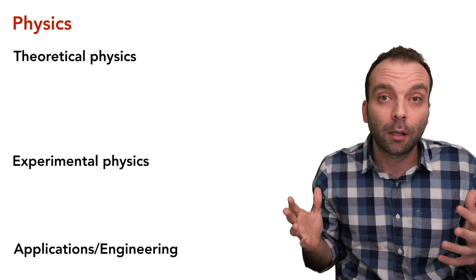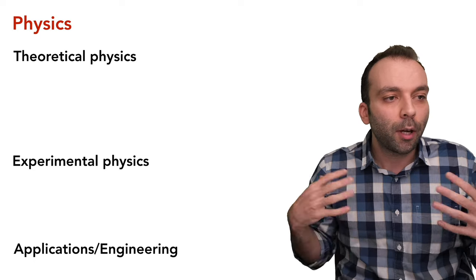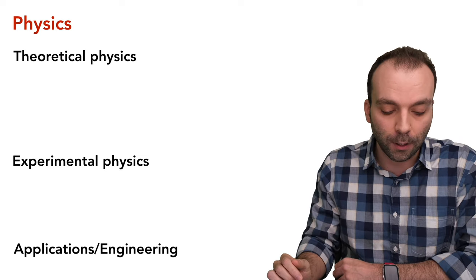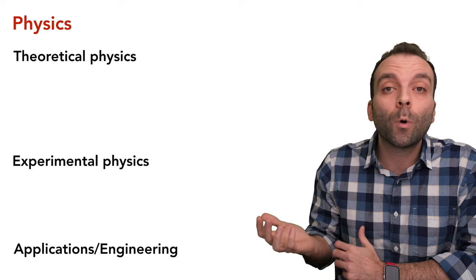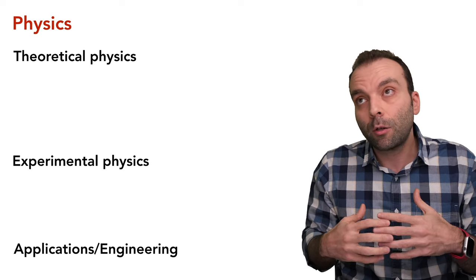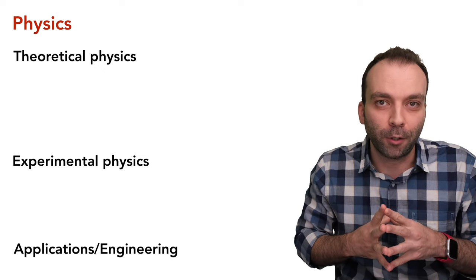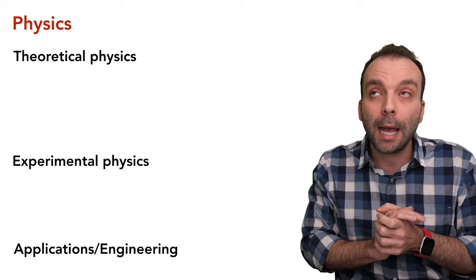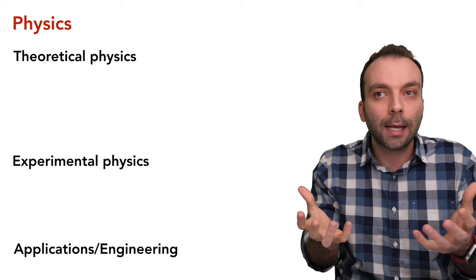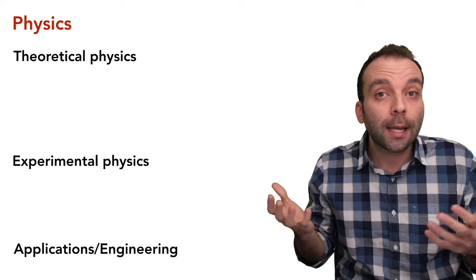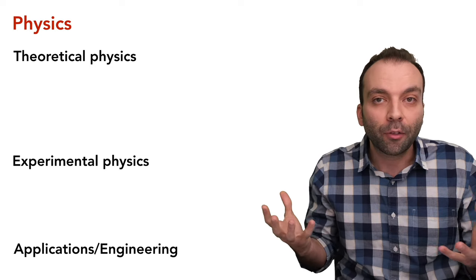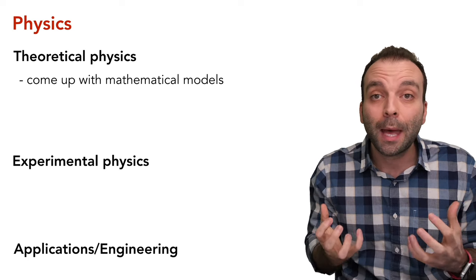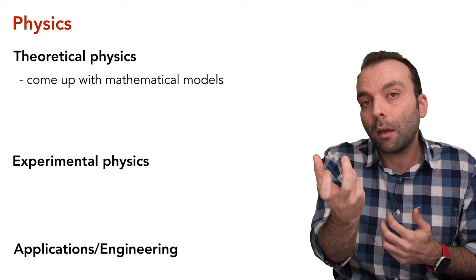I'll divide physics roughly into three main parts: theoretical physics, experimental physics, and the applications/engineering side. What does a theoretical physicist do? You observe some phenomenon — maybe an apple falls to the ground, or you see planets and stars moving — and you want to understand why. Our best method for creating reliable explanations is to come up with a mathematical model that captures the behavior of what you're observing.